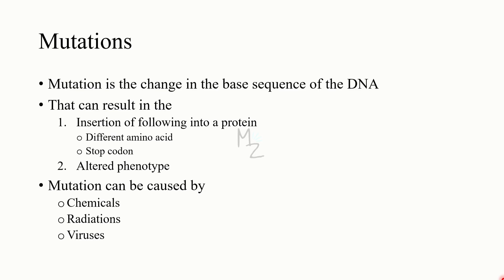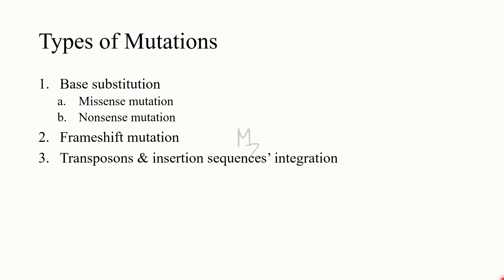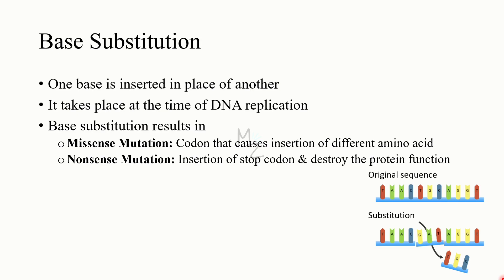Types of mutations: mutations result from three different molecular changes. Number one is base substitution, which has two subtypes: missense mutation and nonsense mutation. The second type is frameshift mutation. The third results from integration of transposons and insertion sequences. Base substitution occurs when one base is inserted in place of another, during DNA replication, either because DNA polymerase makes an error or because a mutagen alters hydrogen bonding. When base substitution results in a codon that causes a different amino acid to be inserted, it is called a missense mutation.